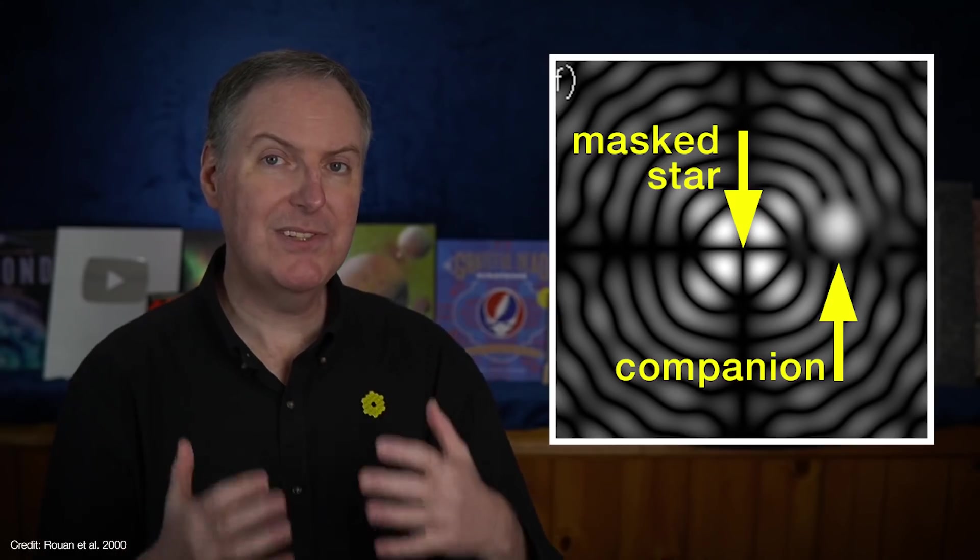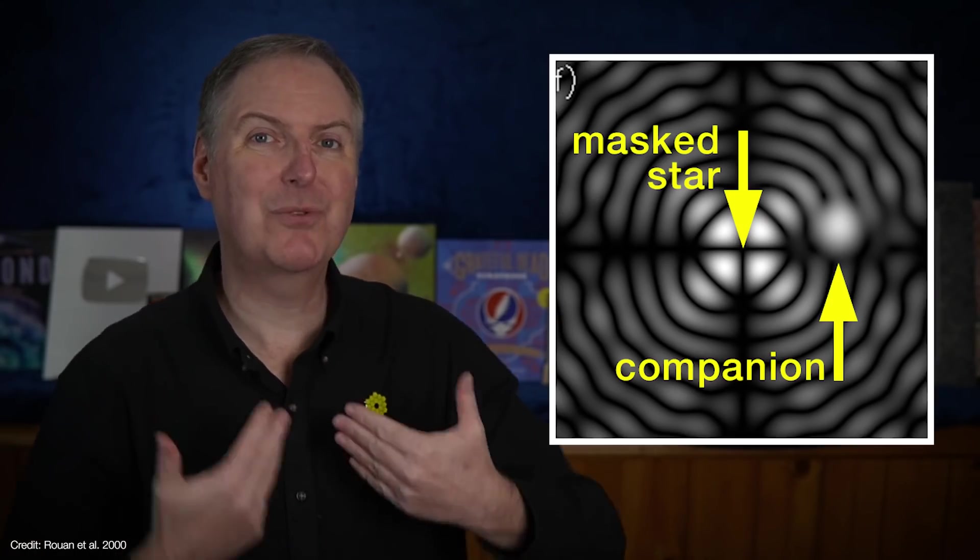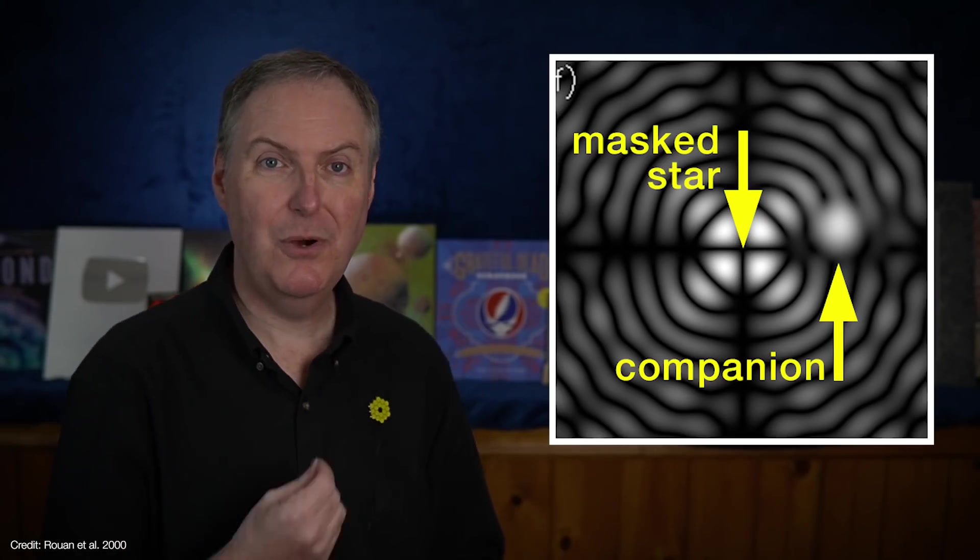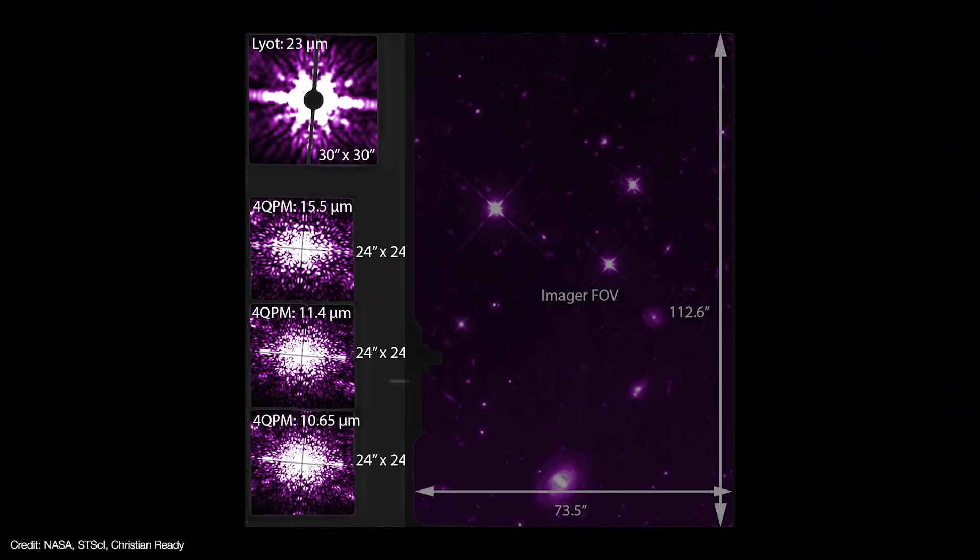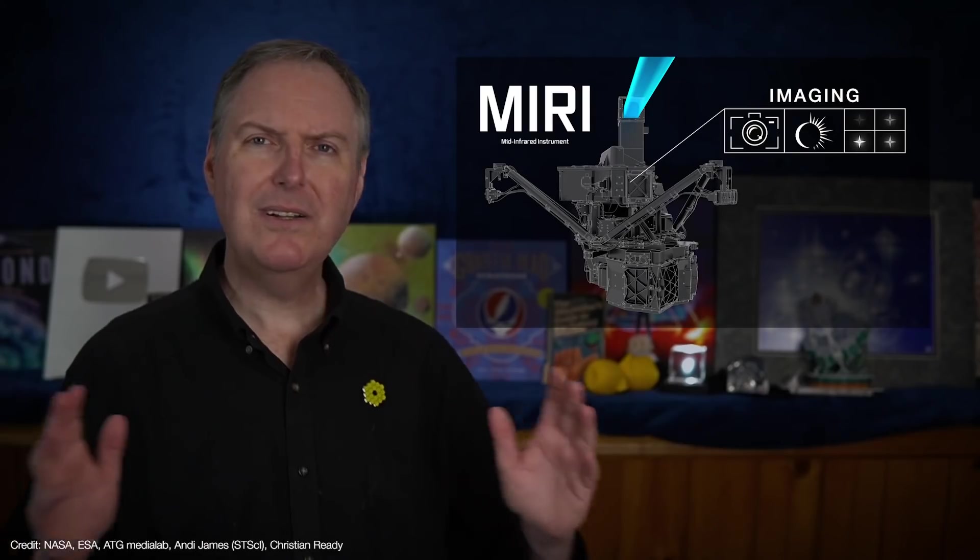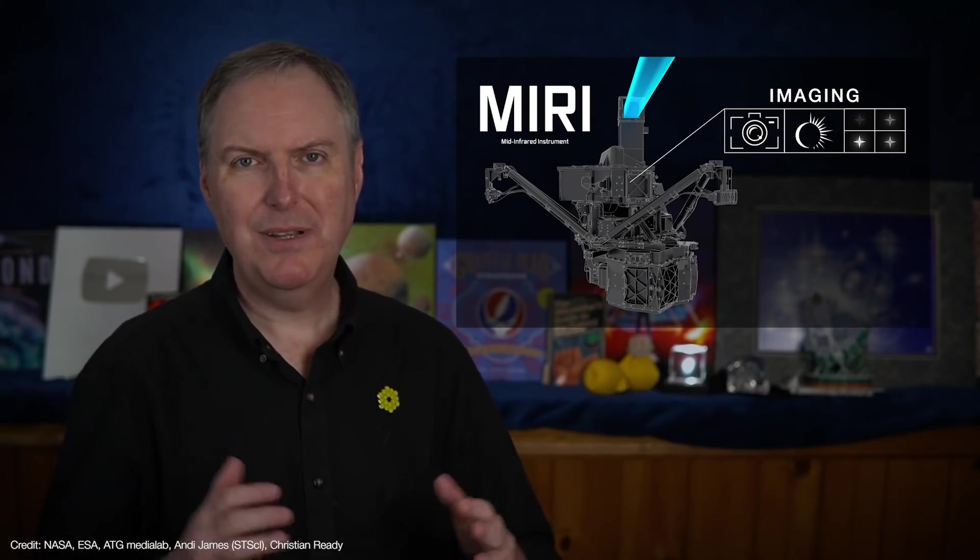This lets MIRI study exoplanets that are up to three times closer to their host stars than it could with the old school Lyot coronagraph. And there's actually three different 4QPM masks, each of which are optimized for a different wavelength of infrared light. But all of that is just half of what MIRI can do. The top half to be precise.